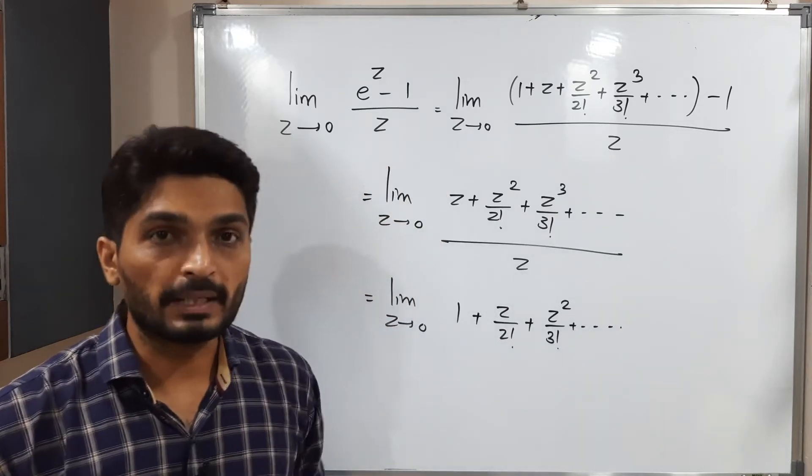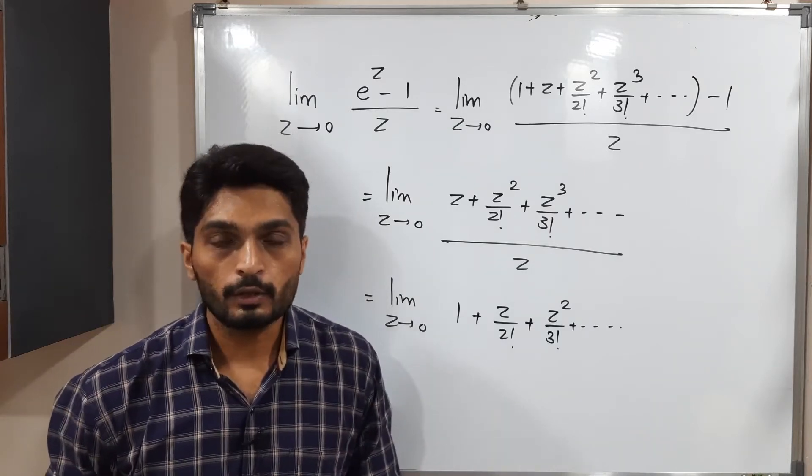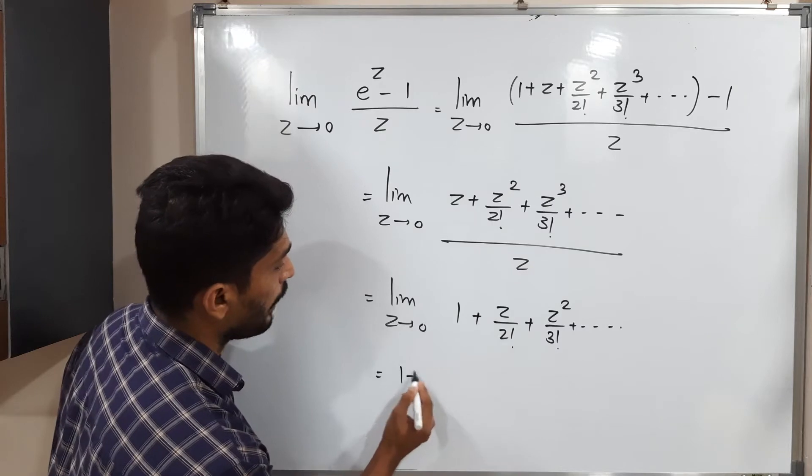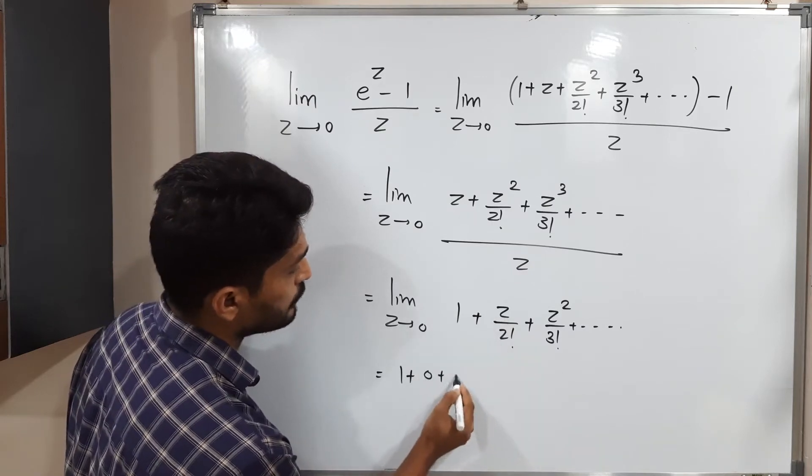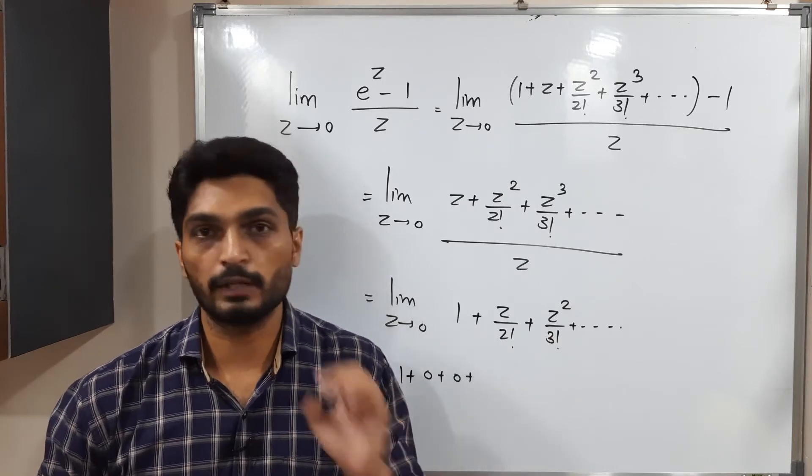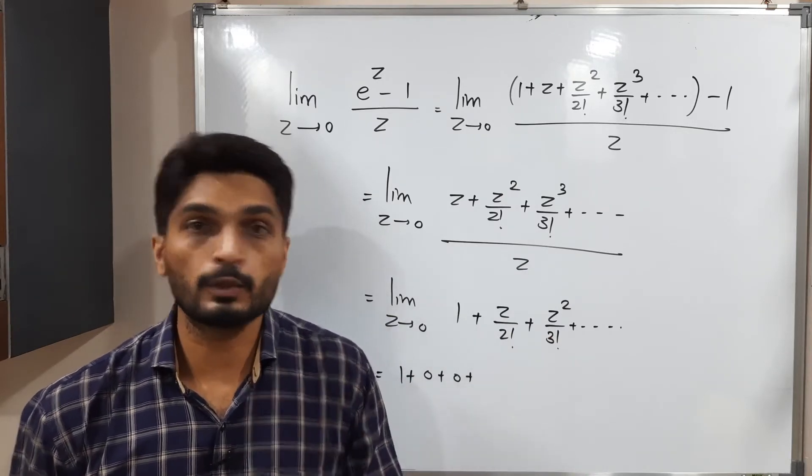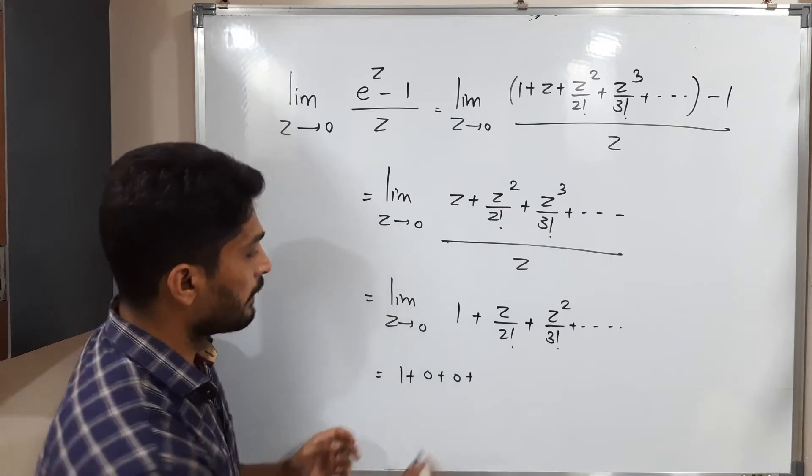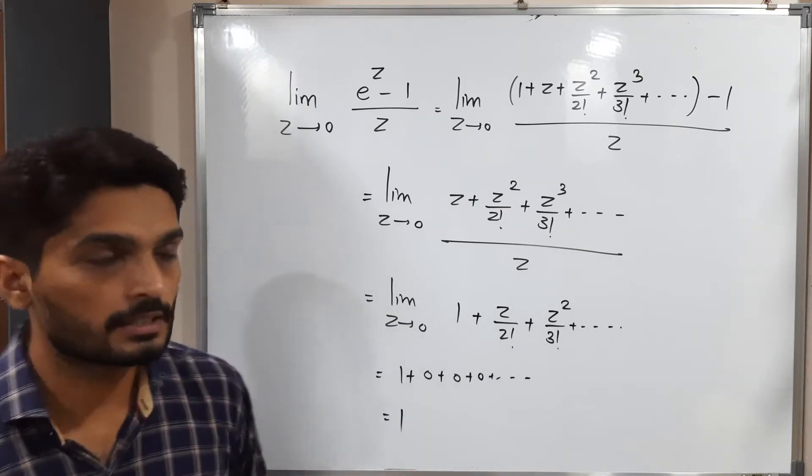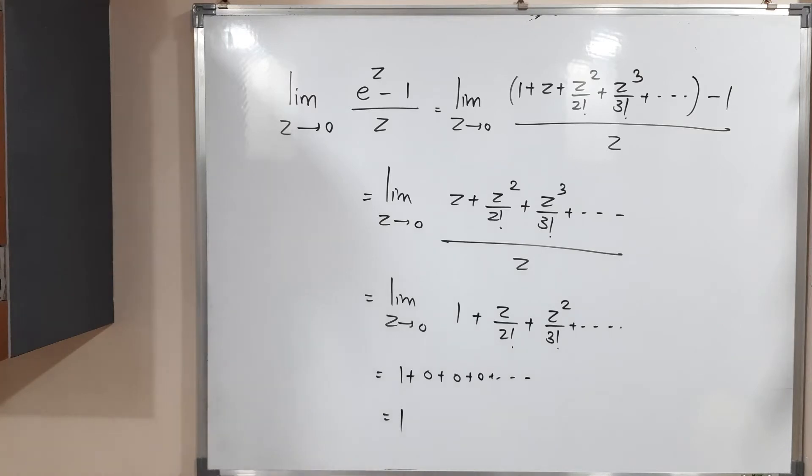So now if you apply the limit, z is in numerator only, so we can directly put z is equal to 0. So what will happen? 1 plus this one will be 0, next one will be 0. In each remaining term definitely powers of z will be there. So if I put z equals 0 all terms will be 0 and we will have only 1. So the value of this limit is 1. Let us discuss one more example but before that make a screenshot of it.